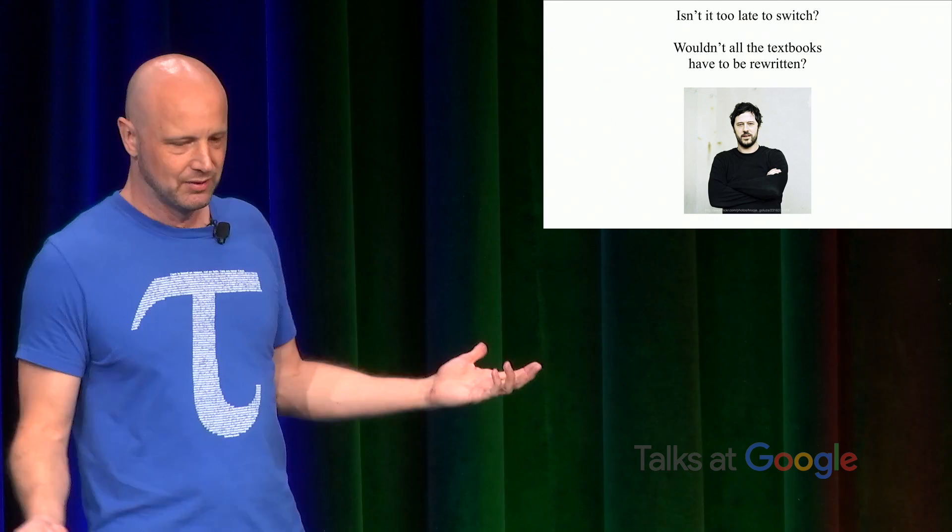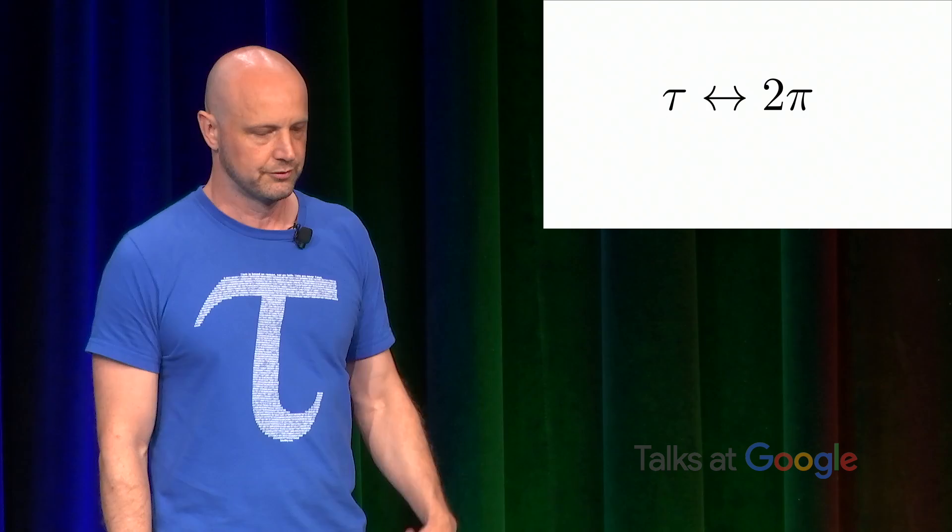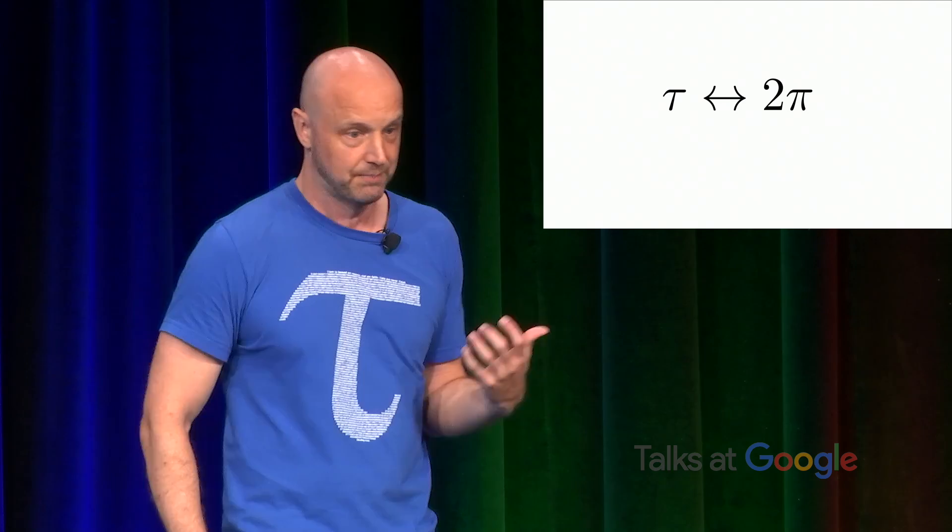Another objection that people raise is to say, well, isn't it too late to switch? I mean, okay, yeah, like I kind of get it, but I mean, wouldn't you just have to rewrite all the textbooks? And the answer is no. We just saw that you can make a change incrementally. You can always substitute tau and 2pi for each other mechanically. So there's really no need to make the change all at once. If you're trying to redefine what pi means, then it would be hopeless. But this can be an incremental change over time. And as we saw, there's already a textbook that uses it.